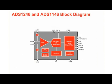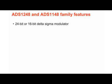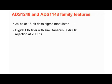Value targeting applications will find the ADS1146 and ADS1246 offer the same great base ADC performance as the ADS1247 and ADS1248 without some of the additional features. The base ADC includes a low noise 24-bit or 16-bit delta sigma modulator with a digital FIR filter that provides 50-60 hertz rejection.